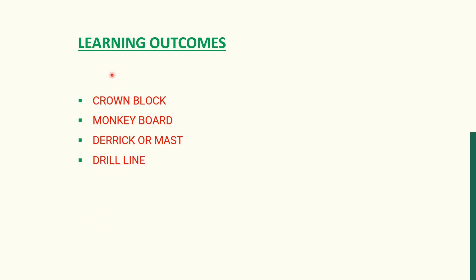The learning outcomes are the following: number one, crown block; number two, monkey board; number three, derrick — which is also called mast; and number four, drill line — which is also called the drilling line or wire rope. In every session we will learn around four rig equipment definitions and their functions.